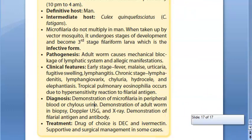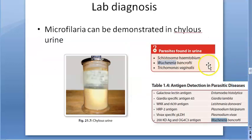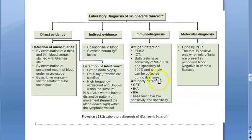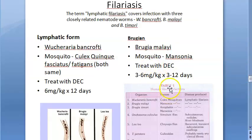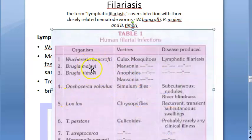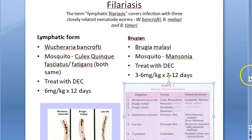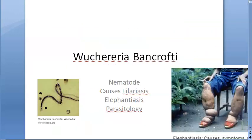We have completed lymphatic filariasis, mainly Wuchereria bancrofti, which along with Brugia malayi and Brugia timori form the three lymphatic filarial species. We have covered almost everything about lymphatic filariasis. That's all for this video.